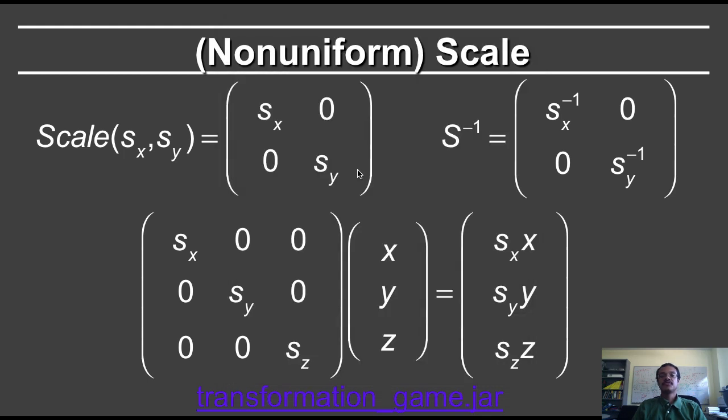The matrix for scaling is a diagonal matrix with the amount of scale in each coordinate noted. So here we have Sx, and here we have Sy, which is the scale in the x and y directions respectively. So the x coordinates are multiplied by Sx, and the y coordinates are multiplied by Sy.